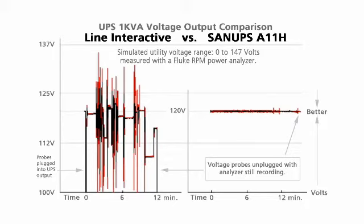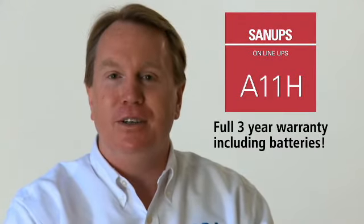For all the engineers and technical people, we have captured this very demonstration graphically on a Fluke Power Analyzer. This graphic depicts voltage stability over the course of time. Your equipment deserves it, your equipment demands it. Consider Sanyo Denki America SanOPS Model A11H — the best power quality available on the market today.